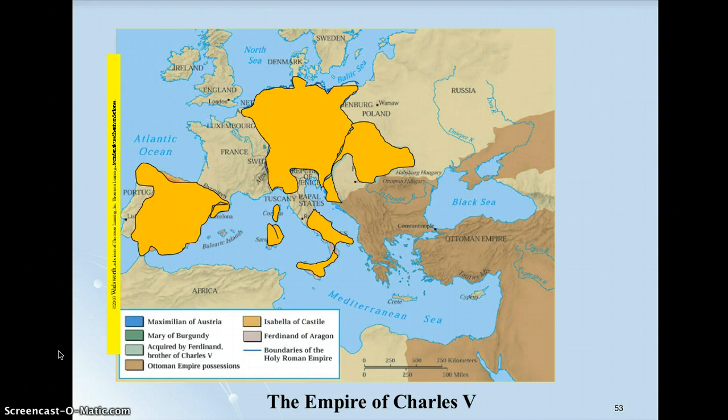When his maternal grandfather died — which was Ferdinand — he inherited part of Spain: Aragon, Navarre, Granada, the southern part of Italy, Naples, Sicily, and part of Spanish America. And then he got Austria and the Holy Roman Empire, that land to the east, when his grandfather Maximilian I died.